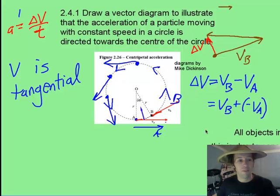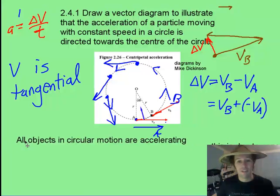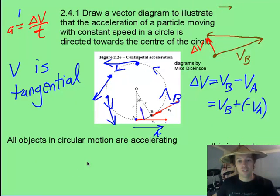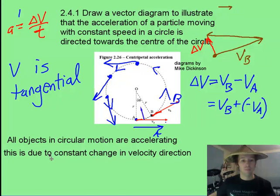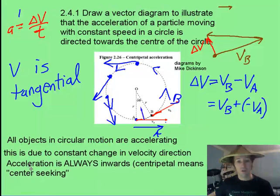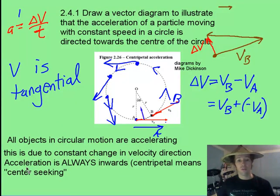Here are some key points: any object in circular motion is constantly accelerating, even if it is at constant speed. It has to be accelerating because velocity is a vector, and if you're always changing the direction of that velocity as you go around the circle, you have to be accelerating. The acceleration is always directed inwards towards the center of the circle, and that's why we use the word centripetal, because it means always going towards the center.